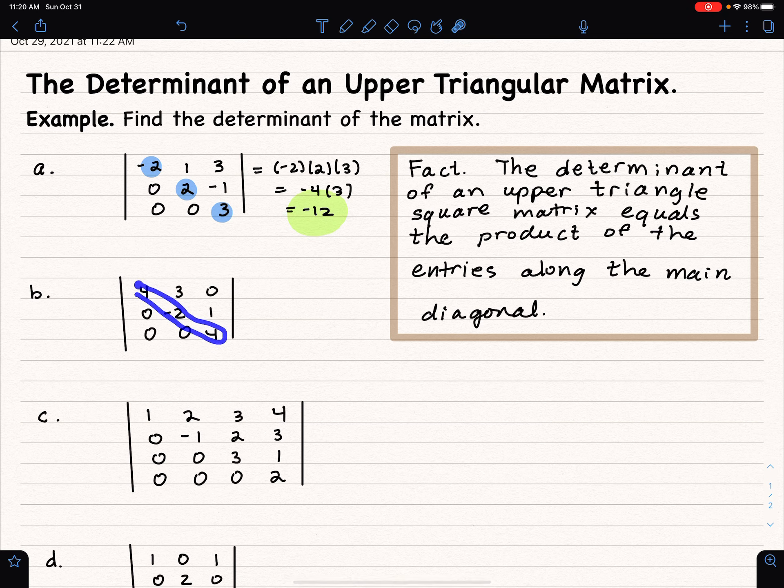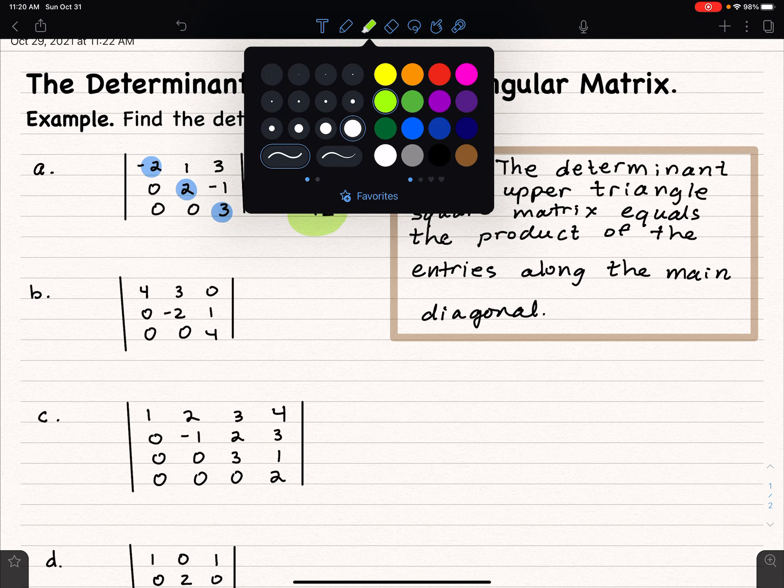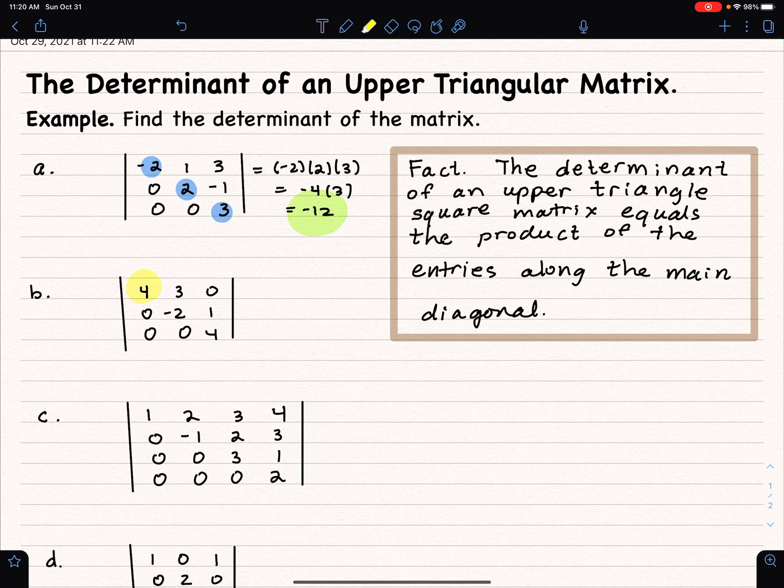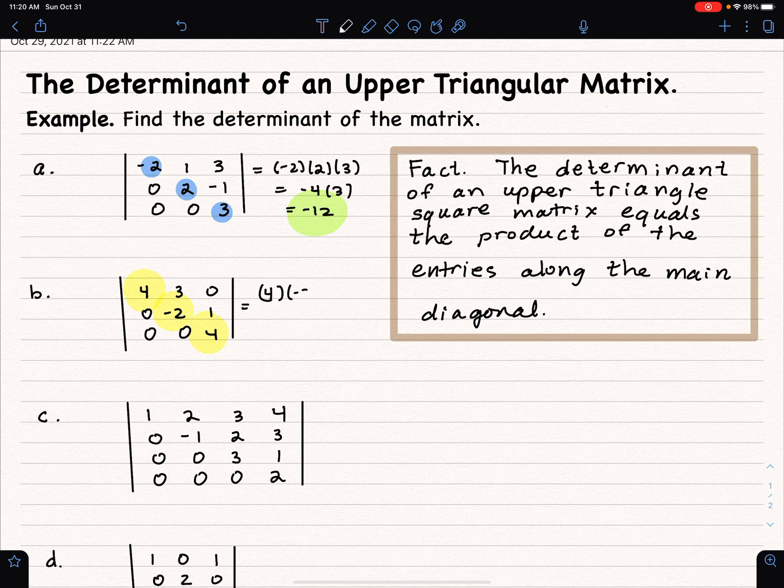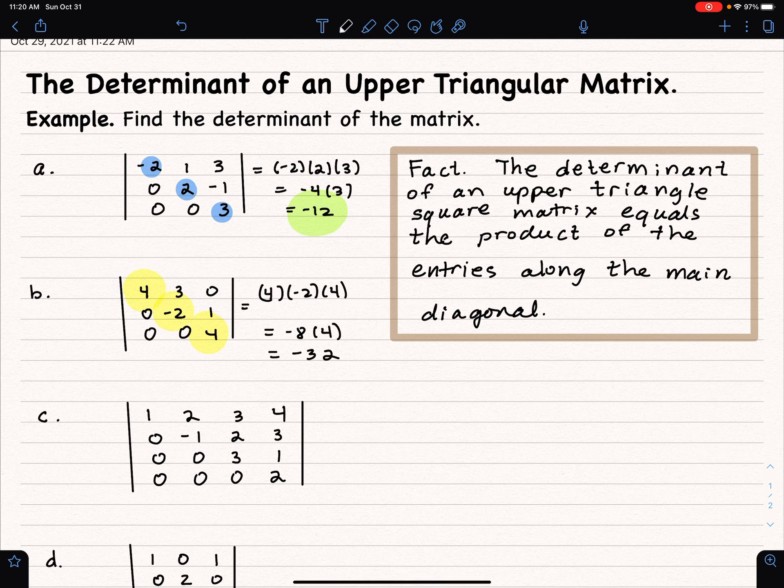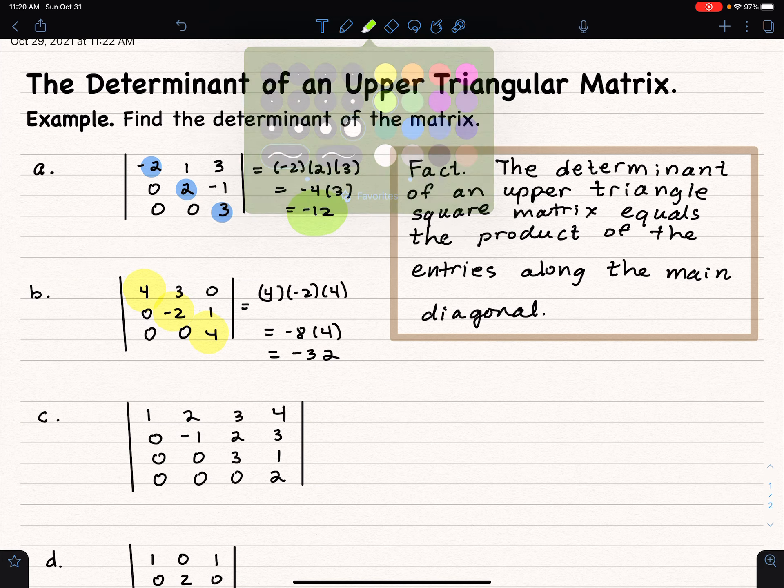Here we go. We're going to multiply along the main diagonal because we have zeros below. By the way, the same statement is true for lower triangular matrices. Lower triangular matrices have zeros above the main diagonal. So here we go. It's going to be 4 times negative 2 times 4. If a matrix is in upper triangular form, then the determinant equals the product of the entries along the main diagonal.